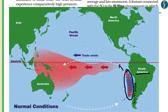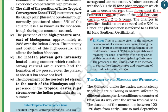El Niño is the development of a warm ocean current along the coast of Peru, temporarily replacing the cold Peruvian current. The presence of the El Niño effect leads to an increase in sea surface temperatures and the weakening of trade winds in the region.